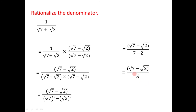As we can see, the denominator is now 5, which is a rational number. We have successfully rationalized the denominator — instead of the irrational √7 + √2, we now have 5. We used the concept of conjugate pairs of binomial surds to do this. I hope you understand this. Thanks for watching.